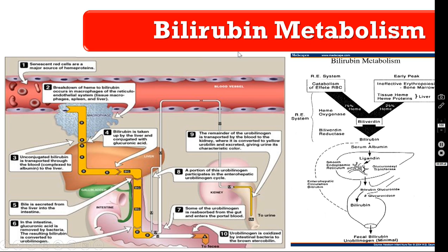In this slide you are seeing the bilirubin metabolism. The old or senescent red blood cells are destroyed by the reticuloendothelial system, namely the spleen. The destruction of red blood cells liberates heme and globin. The heme part is converted into biliverdin by heme oxygenase, and then into bilirubin by biliverdin reductase. This bilirubin is non-conjugated bilirubin, which is fat soluble.